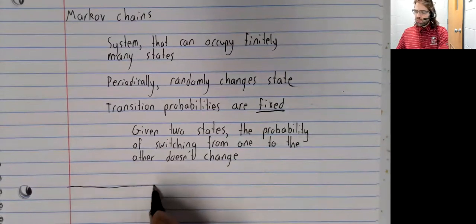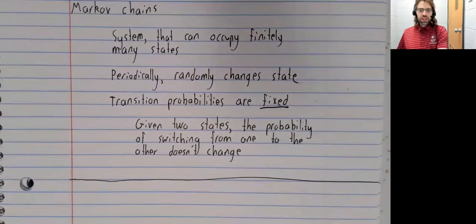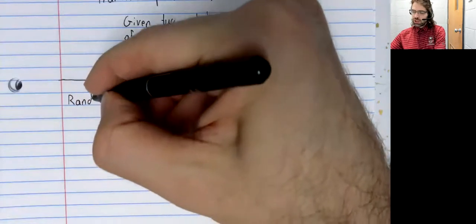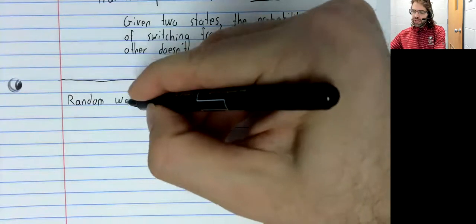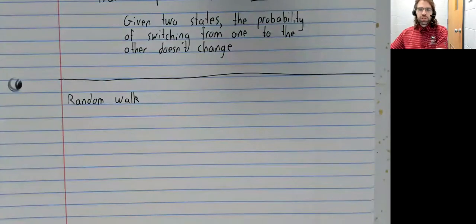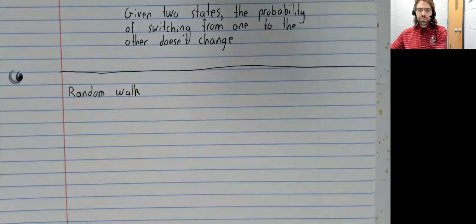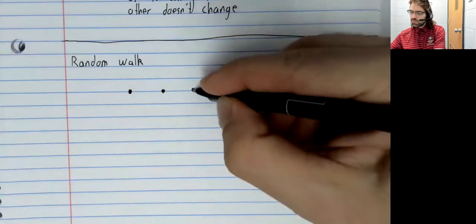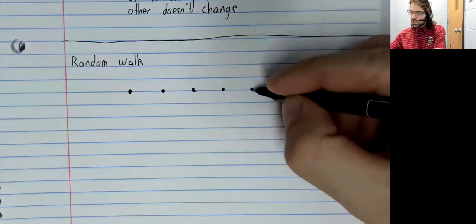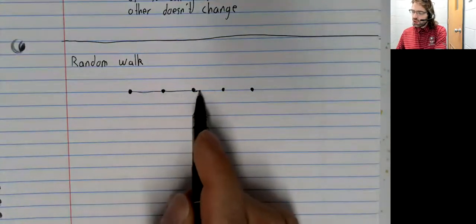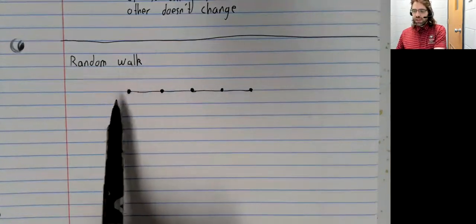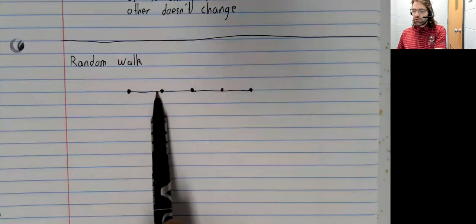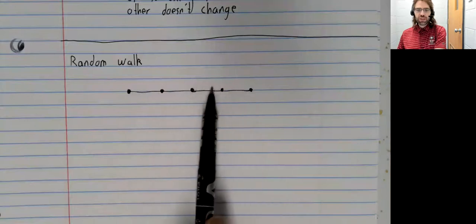As an example of Markov chains, a pretty famous example. Let's look at a random walk. And I'm going to modify this example slightly from the one that's in the notes. The situation here is that we've got points on a line. Imagine that this represents a street.